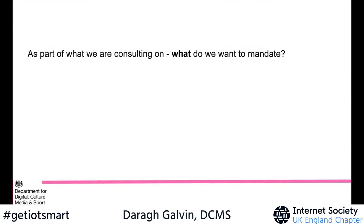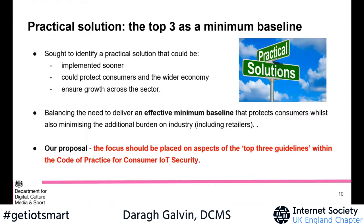Going to slide 9 and slide 10, we're consulting on what we want to mandate and how we want to mandate it. From our perspective, it's about coming up with a practical solution — one that can be implemented sooner, because we're aware the market failure is happening now, and that ensures growth across the sector without dampening innovation. That's why we've come up with the concept of an effective minimum baseline that finds the right balance. Our proposal is that the focus should be placed on aspects of the top three guidelines within our code of practice for consumer IoT security.